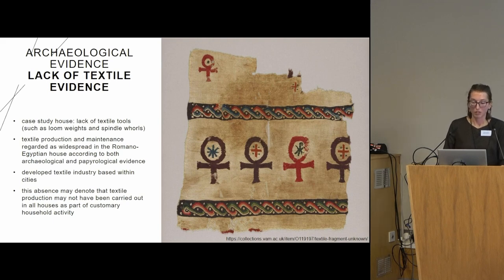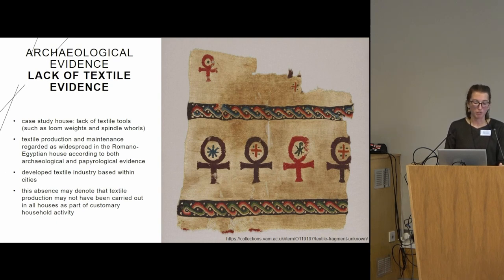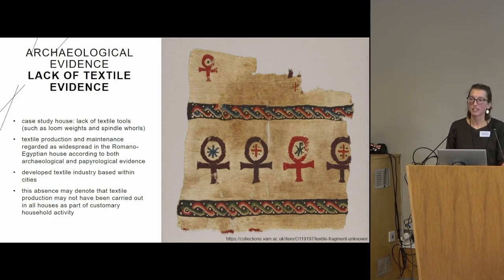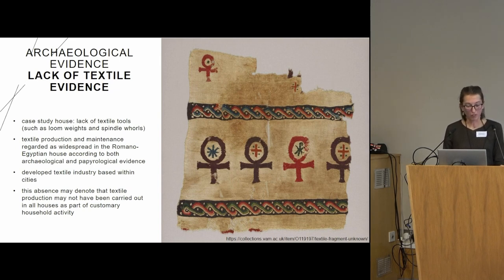I would also like to mention the absence of artifacts as evidence. In the case study house, we could not find any trace of textile tools such as loom weights and spindle whorls — and of course textiles themselves, though their absence is understandable due to preservation bias. We know from both archaeological and papyrological evidence that textile production and maintenance was regarded as very widespread in the Romano-Egyptian house.